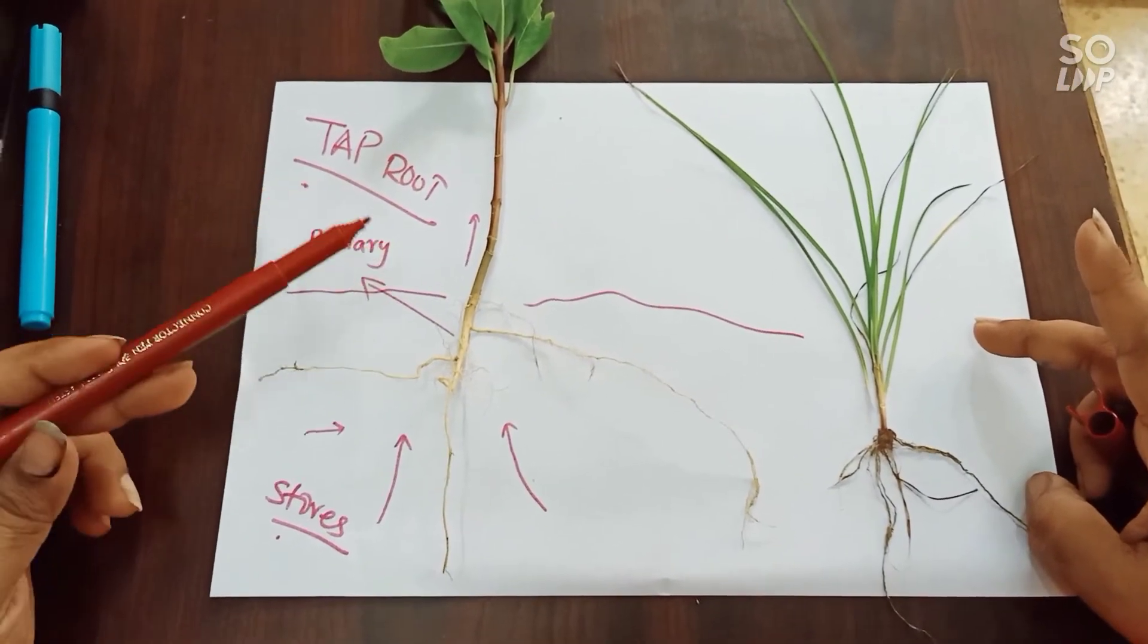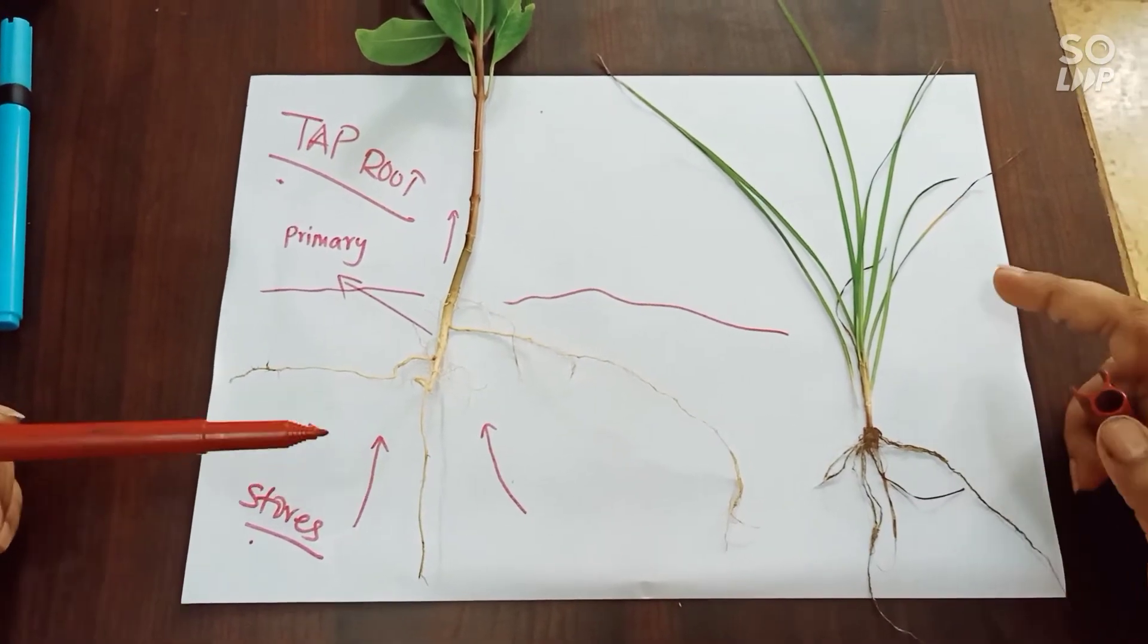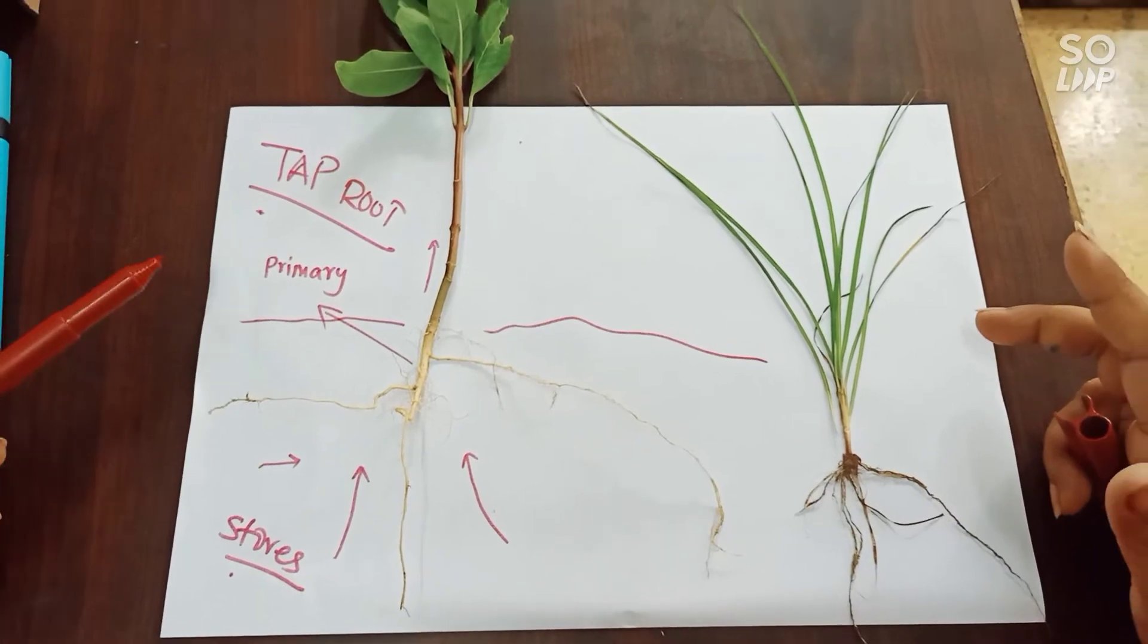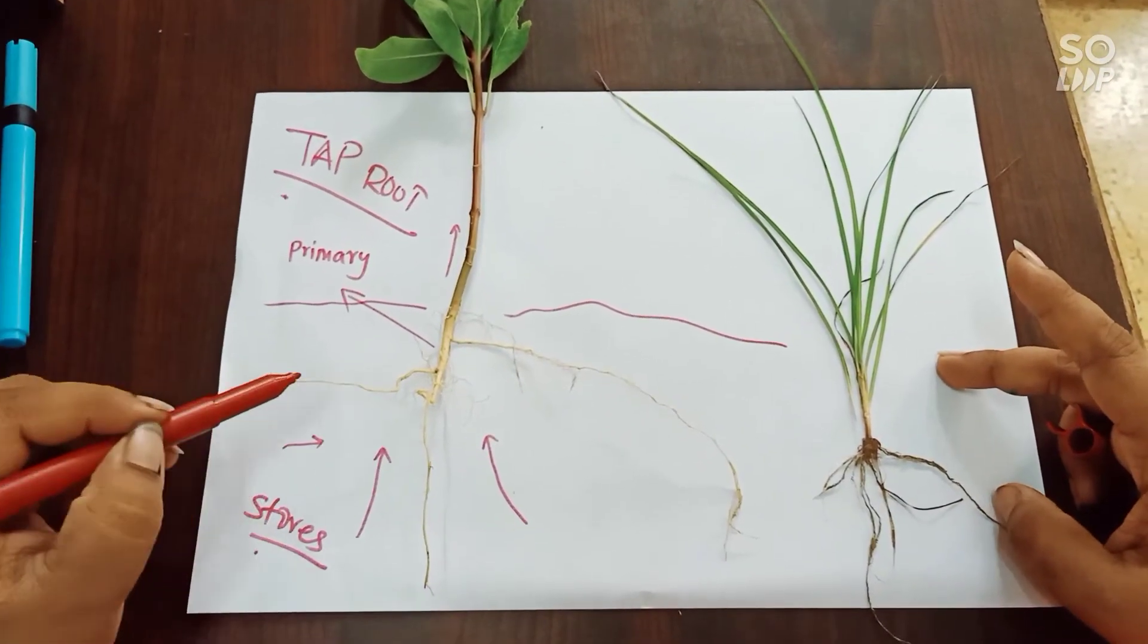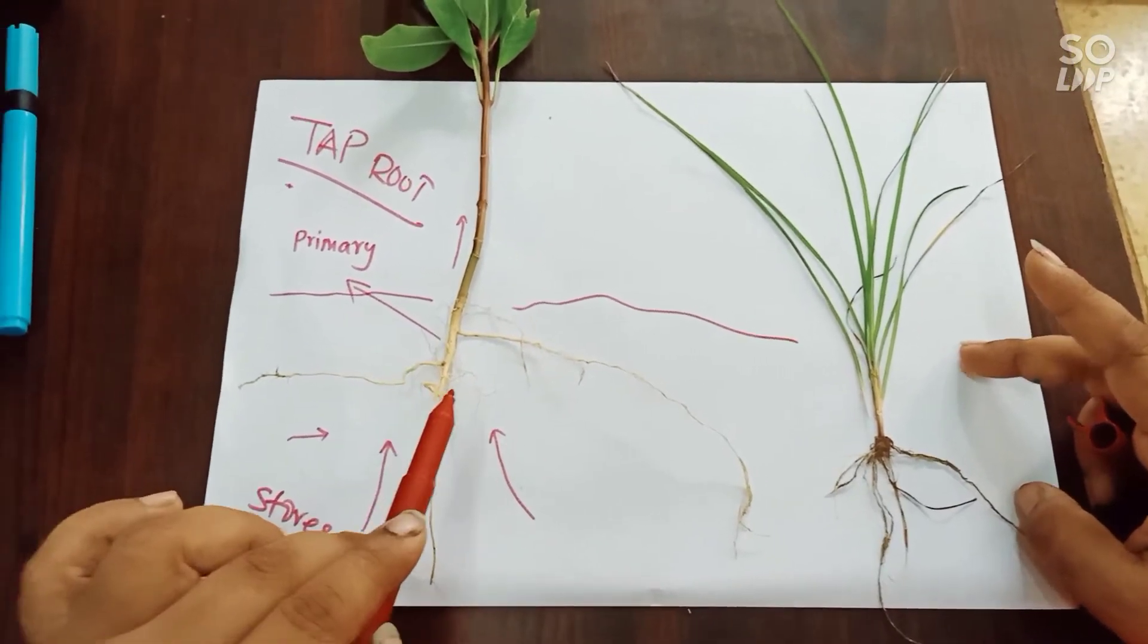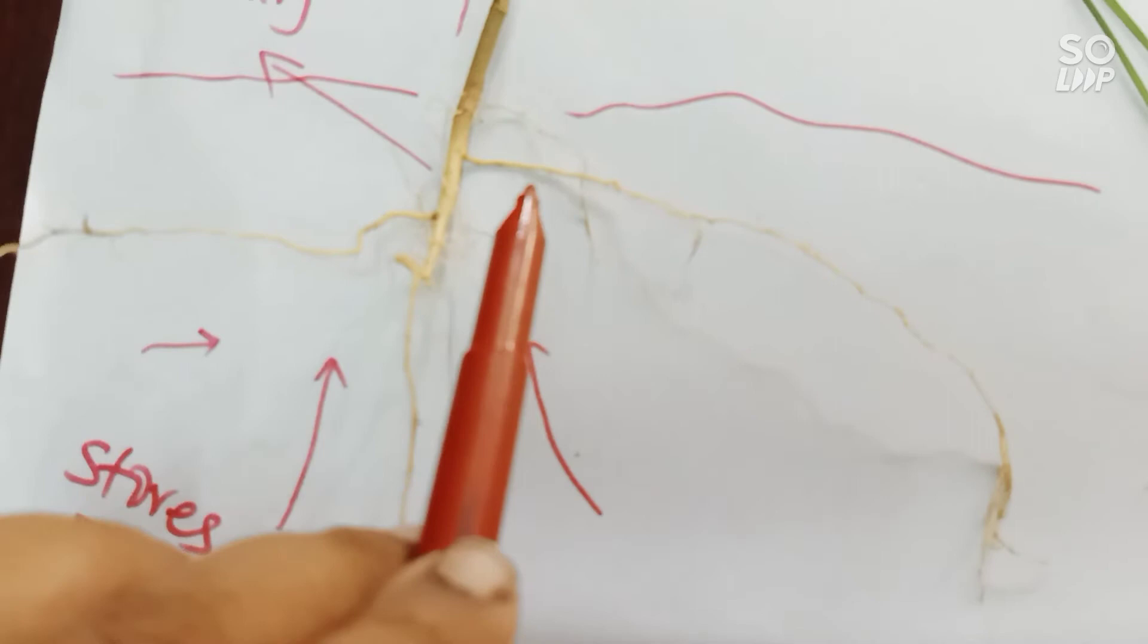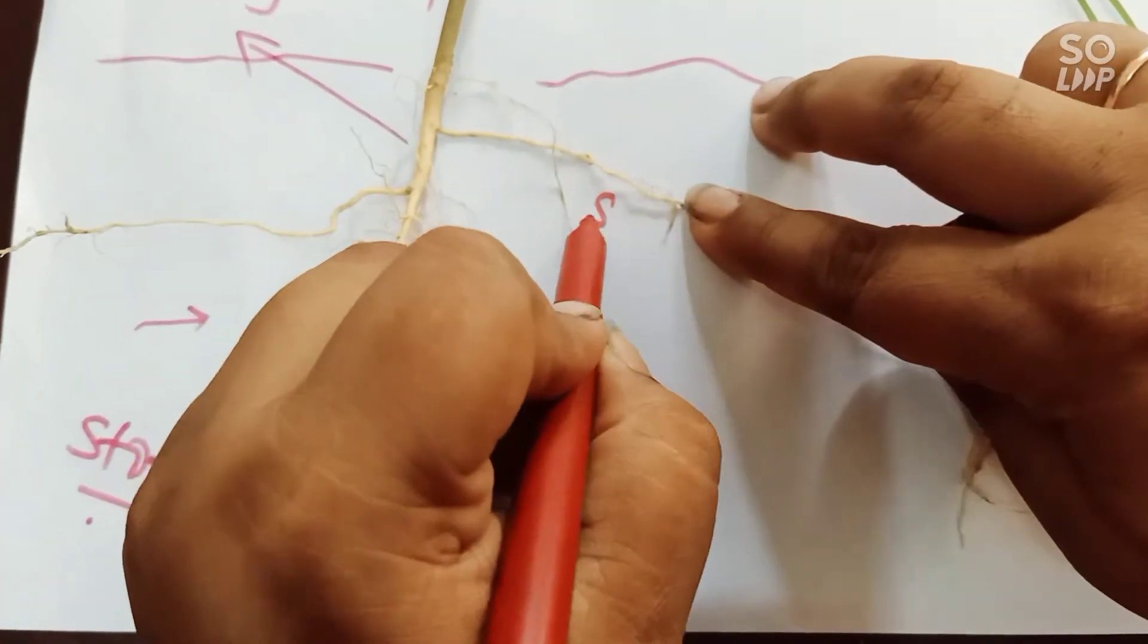So it produces a tap root. Some of these tap roots store food as I told you, examples like carrot and beet. From the tap root you can see this portion. These portions which can be seen, if you lower it down you can see a clearer view that this is actually the thin portions. This is known as the secondary root.